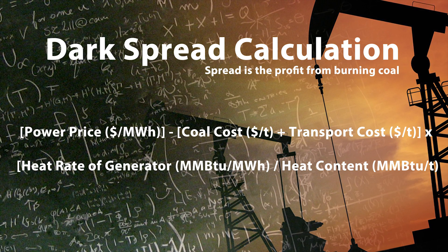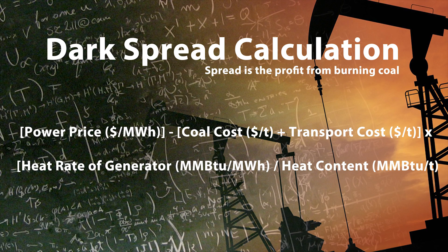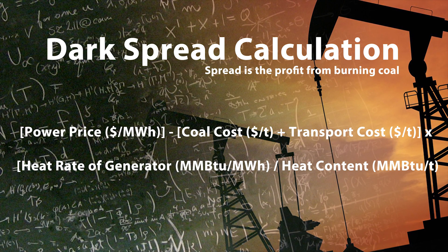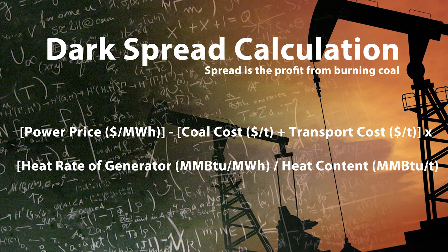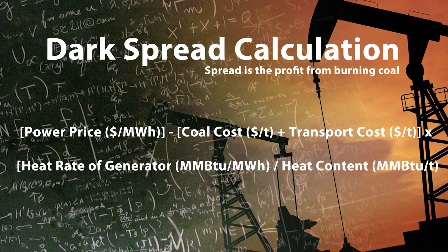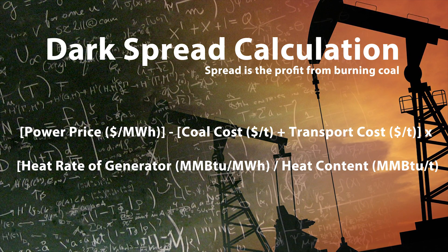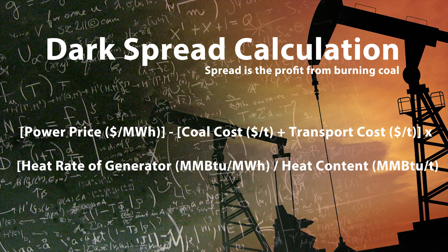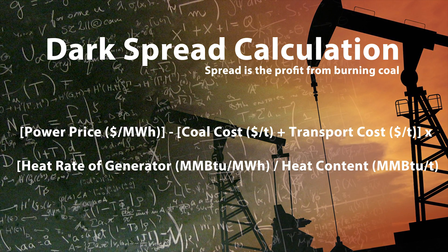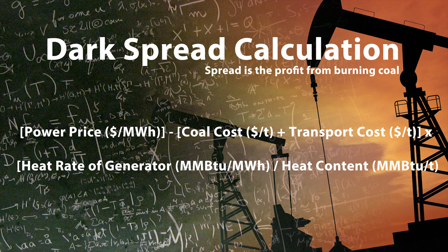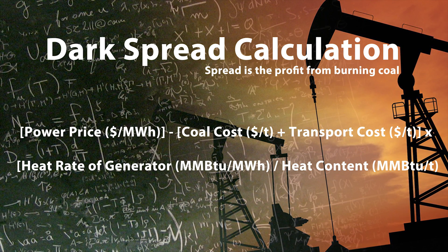On a financial level, we see we've got a power price — that's in revenue terms. That's the amount sold on the market for, in dollars per megawatt hour. And on the cost side, in this simplified example we're dealing with a coal cost and a transportation cost — no other externalities. So I've got a coal cost in dollars per tonne and a transportation cost in dollars per tonne.